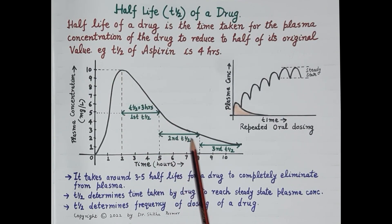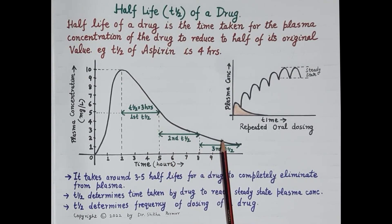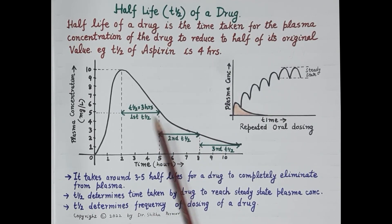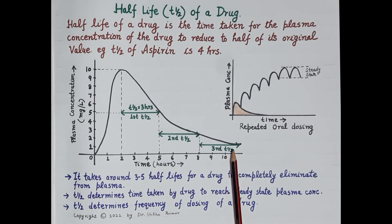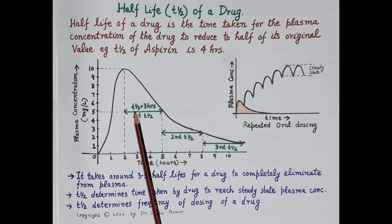The second part of the curve shows a fall in the plasma concentration of the drug. As we know, once a drug is absorbed in the blood it is distributed throughout the body tissues and it is also eliminated from the body, so the plasma concentration of the drug falls. The half-life of a drug is also termed as T-half.